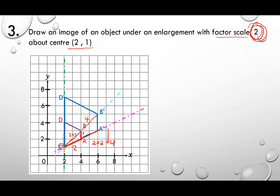For another line: 1, 2, 3 from the center — the original distance is 3. Times 2, the image distance becomes 6. So count: 1, 2, 3, 4, 5, 6 to place the image point.